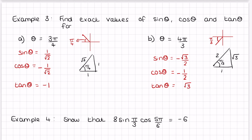Alternatively, tan can be worked out as sine over cos: (−√3/2) ÷ (−1/2) = √3, because the 2's cancel and the negatives cancel.